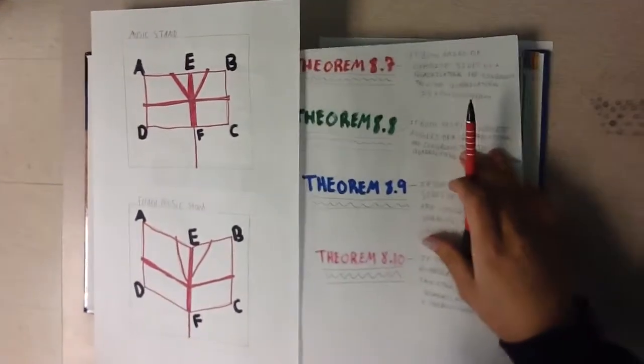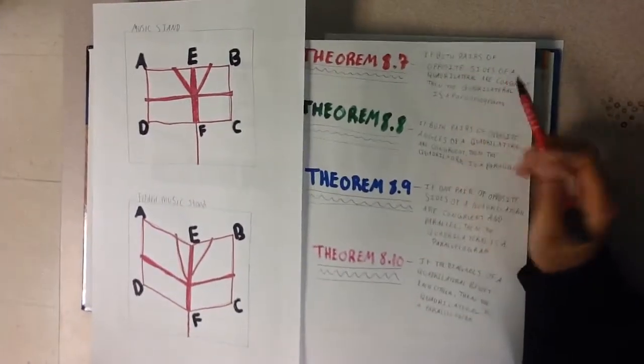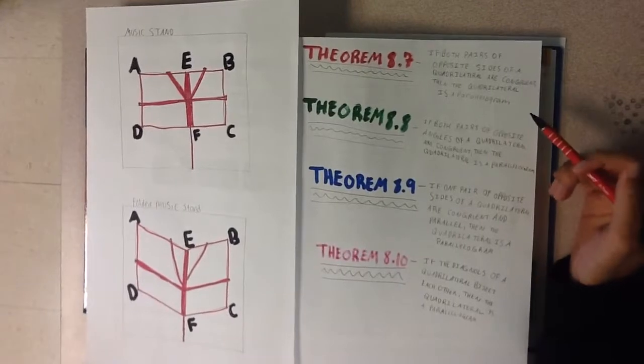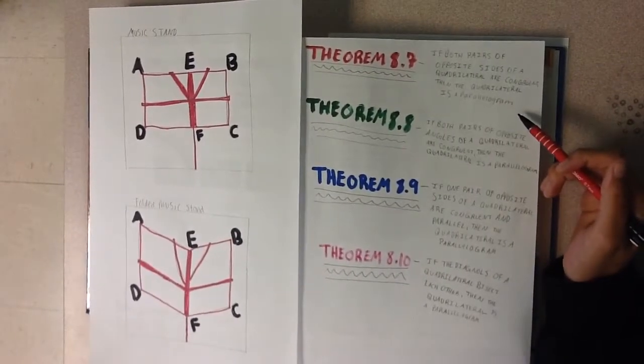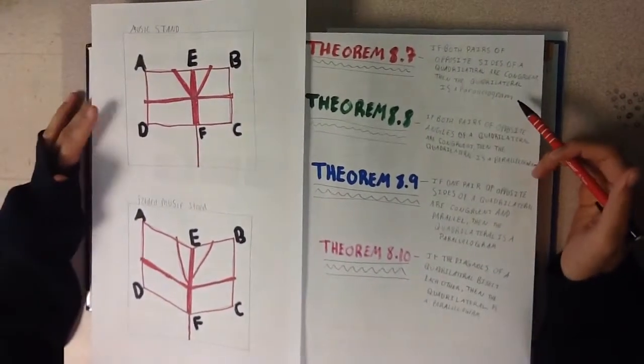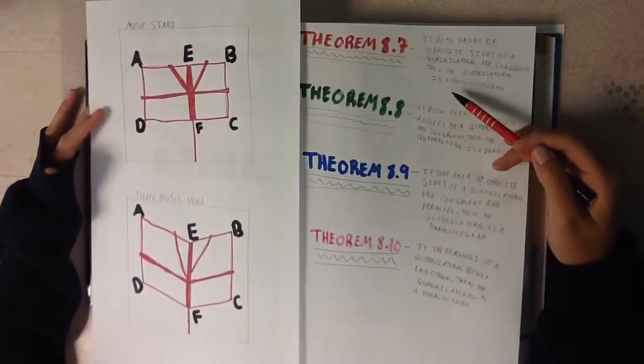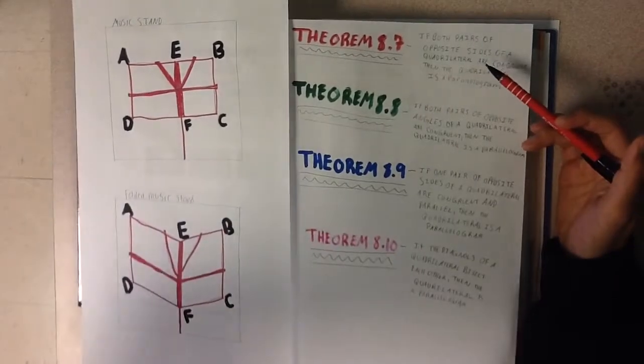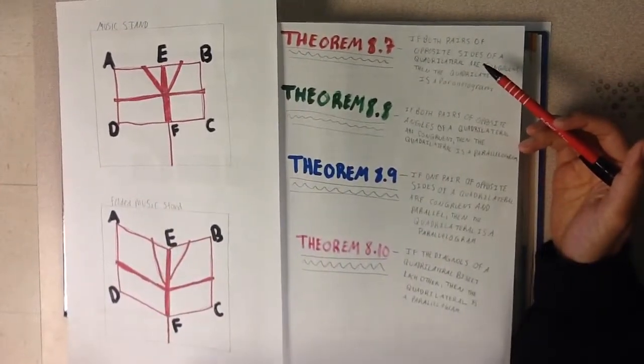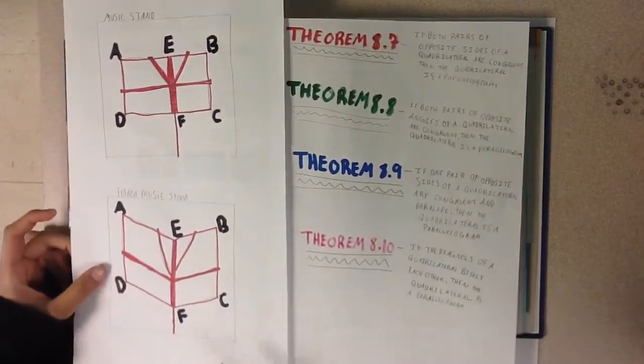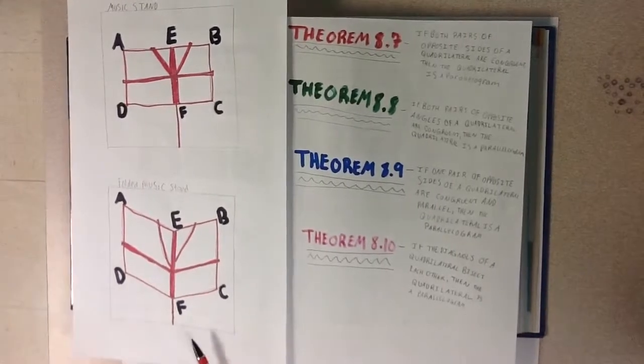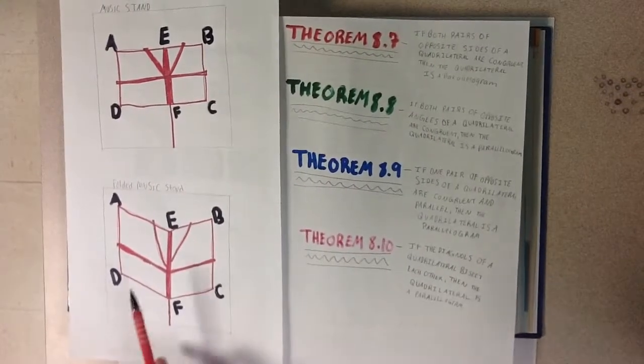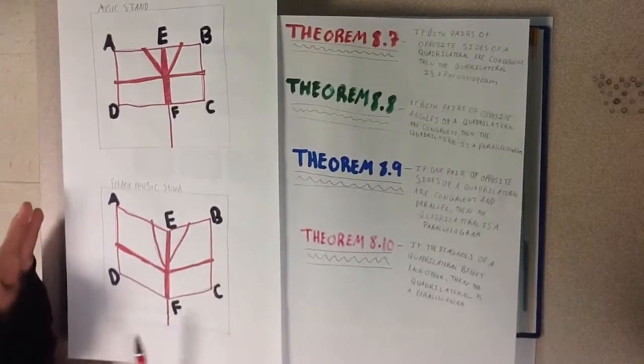Theorem 8.7 says that if both pairs of opposite sides of a quadrilateral are congruent, then the quadrilateral is a parallelogram. In the first picture, this theorem does apply, because both pairs of opposite sides of a quadrilateral are congruent. But then when it's folded up in the second picture, it doesn't apply, because they're not congruent.